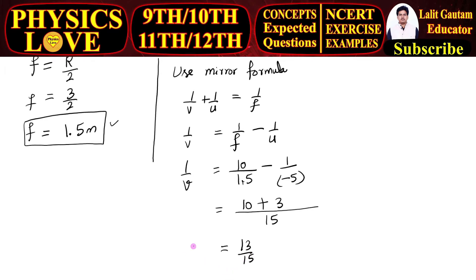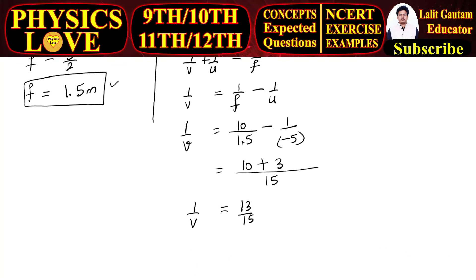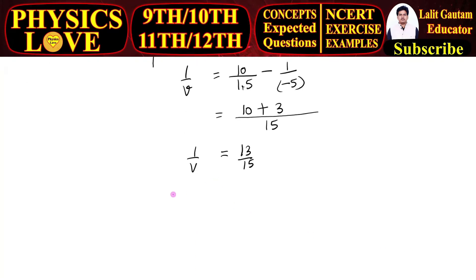Now we obtain the value, it is 13 by 15. So 1 by v is 13 by 15, but we have to calculate the value of v. So just reciprocal it: v is equal to 15 by 13. Now let us divide it.